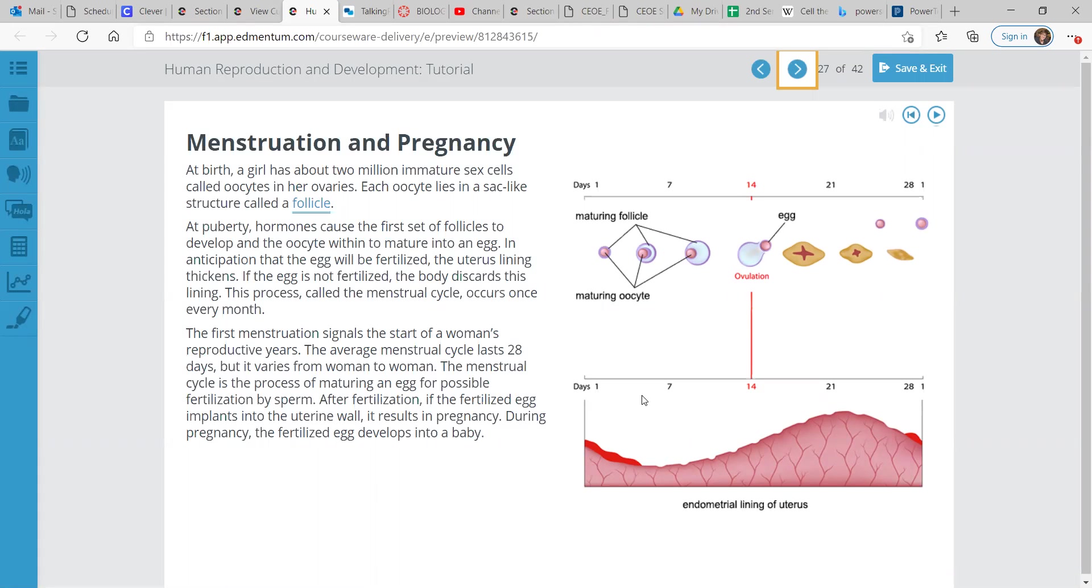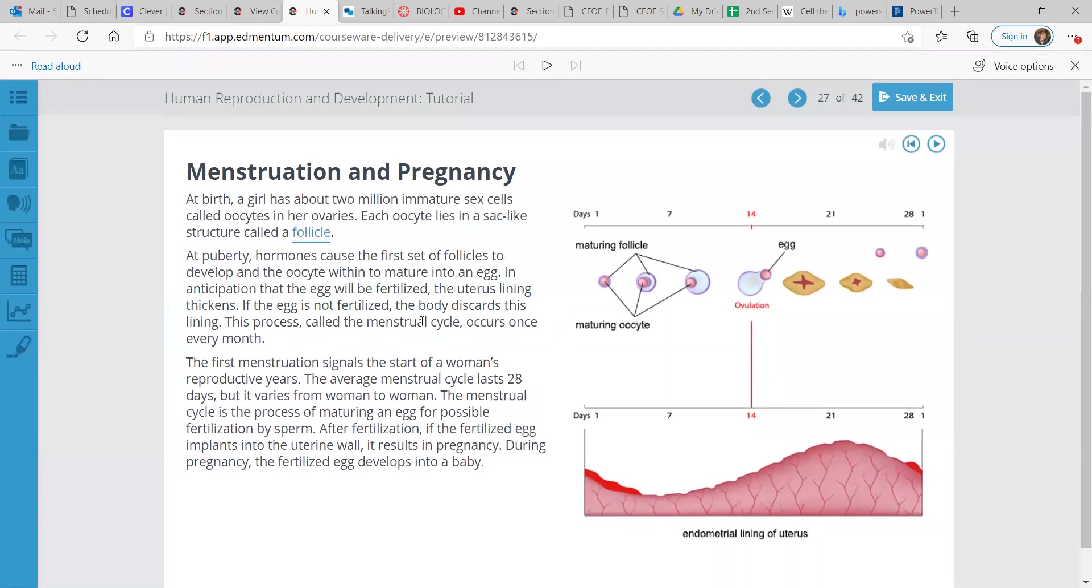At birth, a girl has about 2 million immature sex cells called oocytes in her ovaries. Each one of these lies in a sac-like structure called a follicle. At puberty, hormones cause the first set of follicles to develop and the oocytes within mature into an egg.